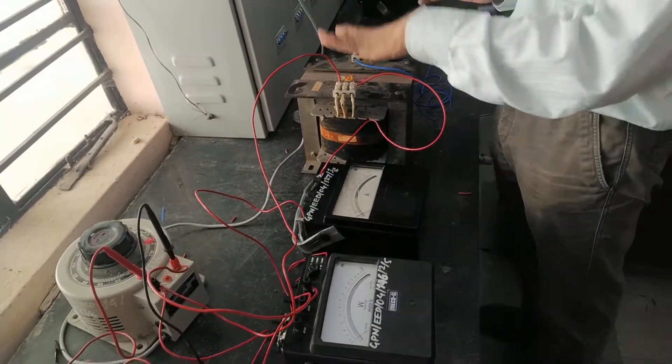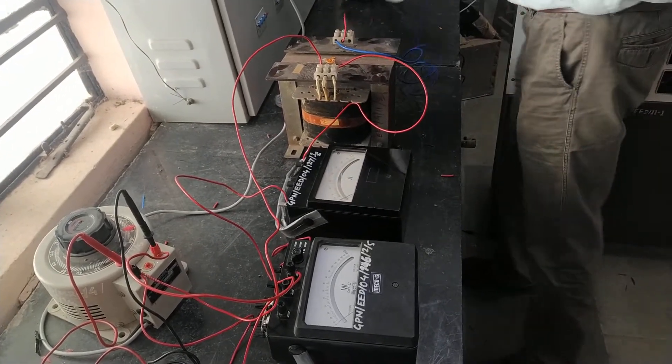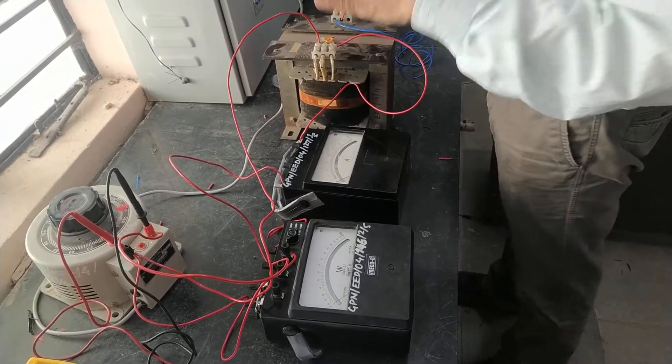To variac we are going to connect rated voltage across the primary of the transformer, secondary we are going to keep open, secondary terminals are being kept open, and we have to apply rated voltage across the primary.